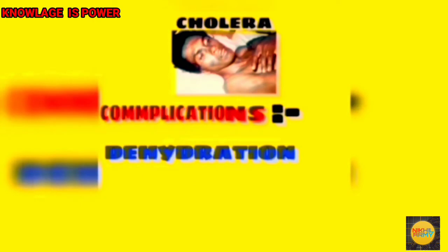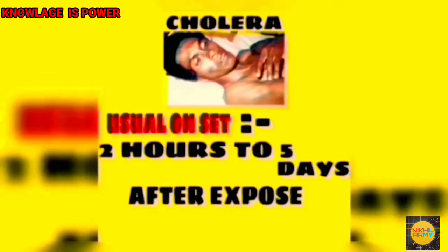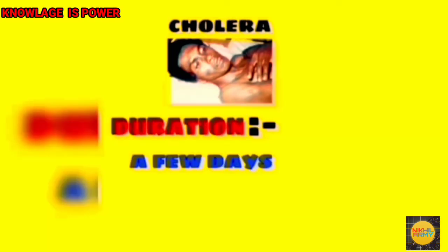The complications of cholera are dehydration and others. The difficulties caused by a particular disease are called complications. Now let's know the usual onset of cholera. The time taken by a disease to be known to us that we got a particular disease is called the usual onset. The usual onset of cholera is two hours to five days after exposure.